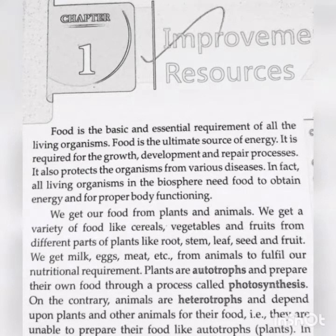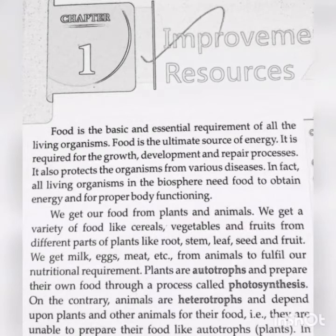Animals cannot prepare their own food. Human beings also cannot prepare their own food. They are called heterotrophs. Animals are heterotrophs and depend upon plants and other animals for their food — they are unable to prepare their food like autotrophs, which means plants.